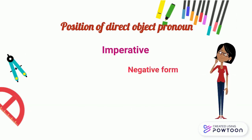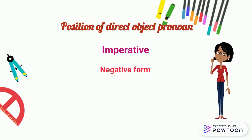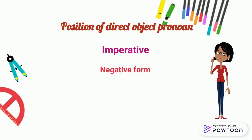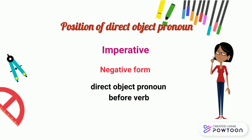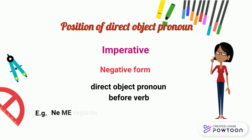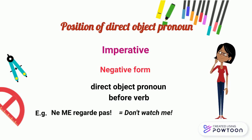However, at the negative form of the imperative, we use the normal direct object pronoun and it is placed before the verb. For instance, ne me regarde pas — don't watch me.